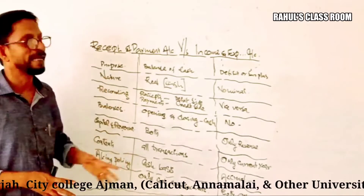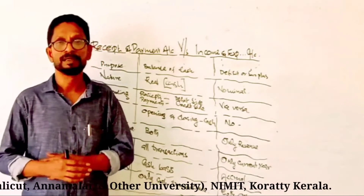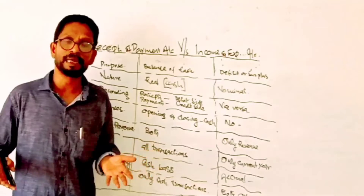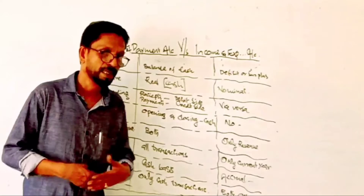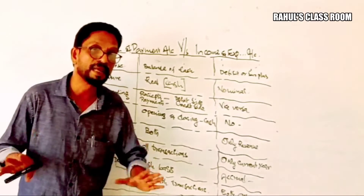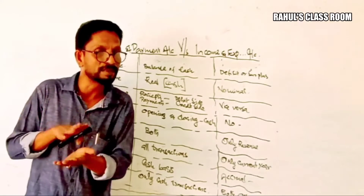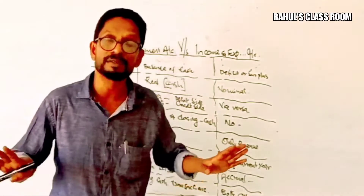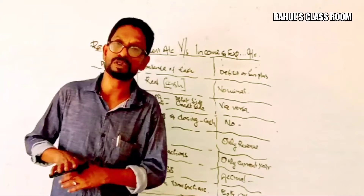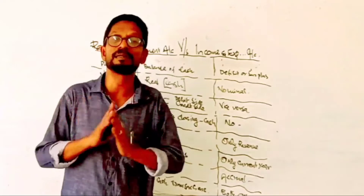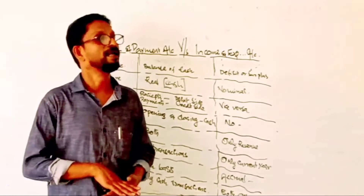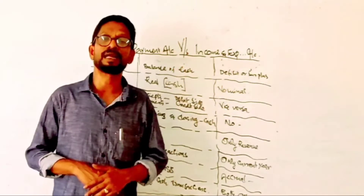The second difference is Nature. The Receipt and Payment Account is a summary of cash transactions, and therefore we can say it is a real account — because cash is an asset and all assets are covered under the category of real account. But the Income and Expenditure Account is prepared for finding the surplus or deficit by comparing income and expenditure, so it falls under the category of nominal account.